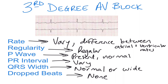Those are the two that people commonly mix up. If you have an atrial rate and a ventricular rate that are completely disassociated from one another, and other than that things look relatively normal, there's a very good chance you're looking at a third-degree AV block.